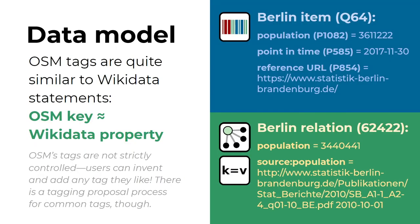To give an example, here's the Wikidata item for Berlin. We can have a property like population — 3 million something — with a qualifier point in time and references. And they have counterparts in OpenStreetMap. For example, the Berlin relation in OpenStreetMap has the tag population equal to 3.4 million something. And it has another tag for source.